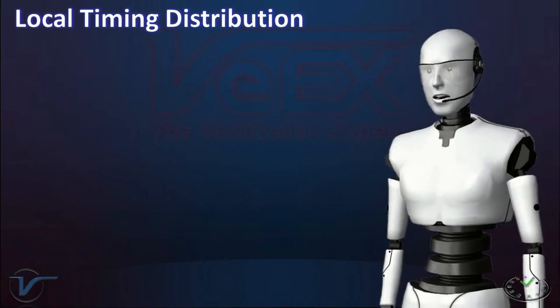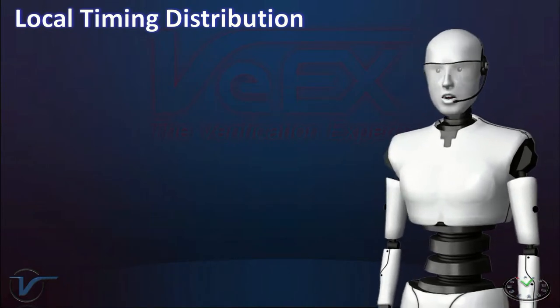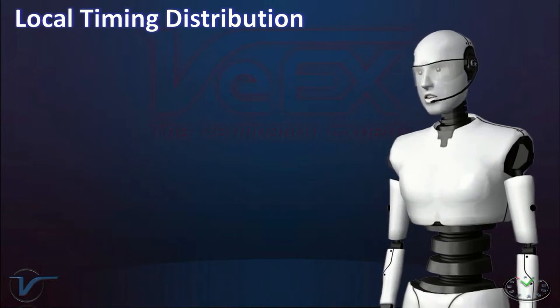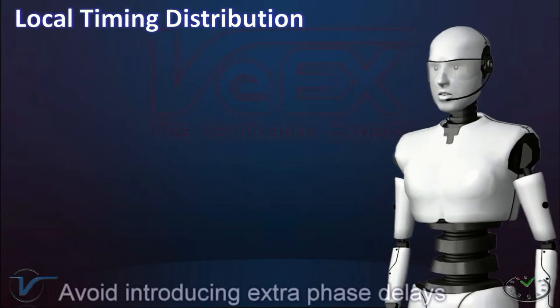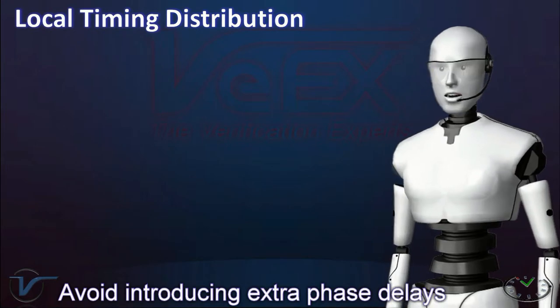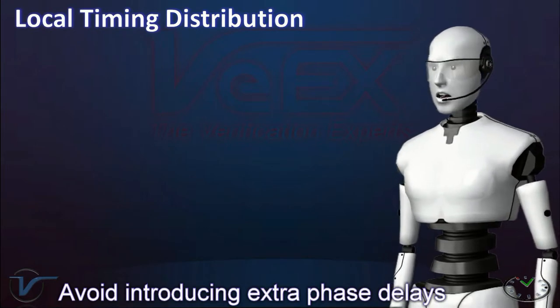What about local timing distribution? You may think that using GPS or 1588 PTP to bring accurate timing to a remote location is enough. But that does not guarantee that timing would be distributed correctly.